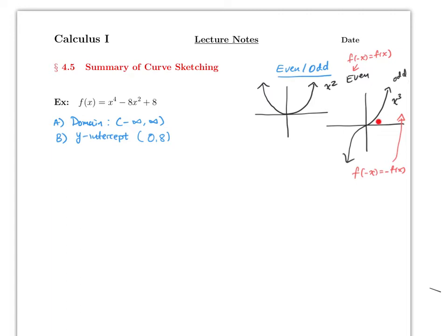For an odd function, the area on one side will be the same as on the other side — we'll talk about that in chapter 5. For an even function, the areas on both sides are the same and positive, so they add up. We'll talk about this more in chapter 5. For now, just check if the function is even or odd, because that makes graphing easier.